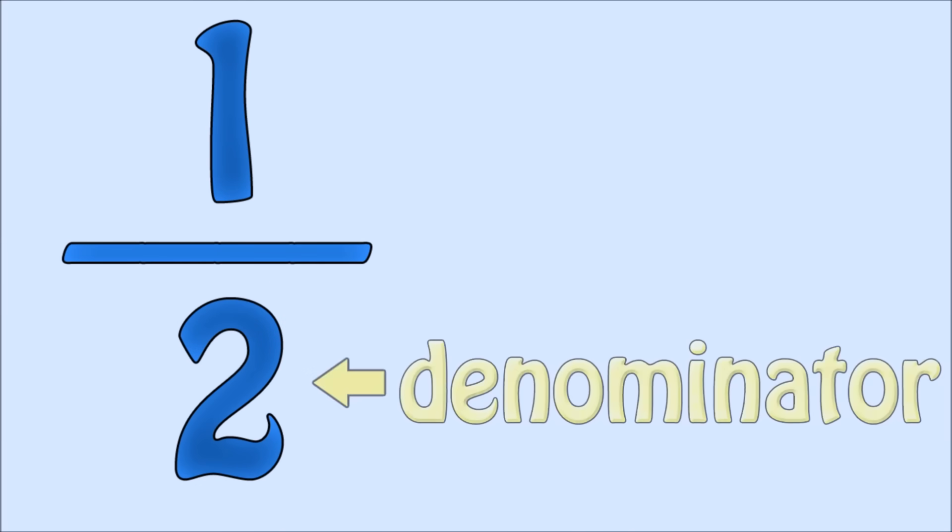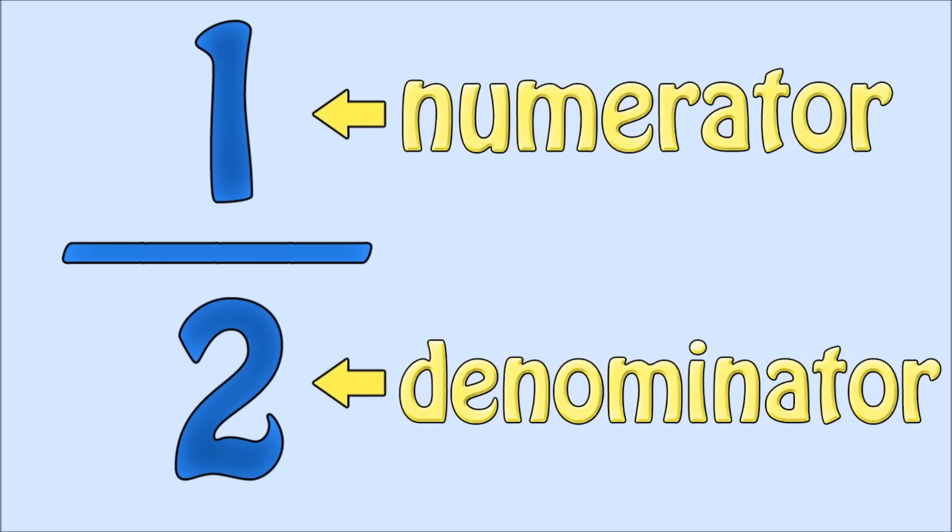A fraction looks like this. The bottom number is called the denominator. It shows how many equal pieces an object has been divided into. The top number is called the numerator. It shows how many parts of the denominator you are looking at.